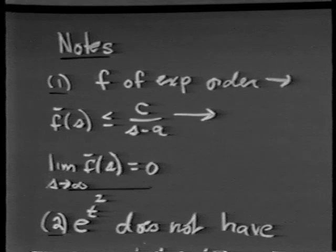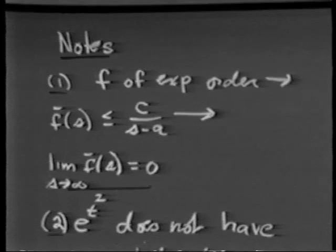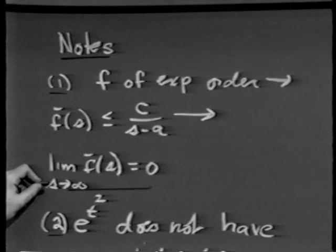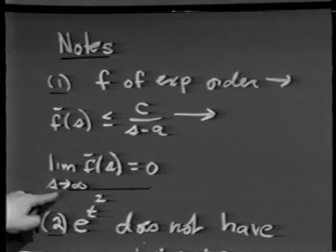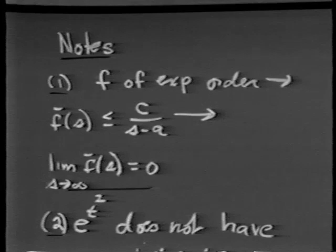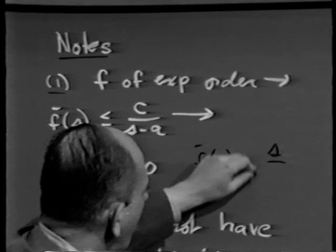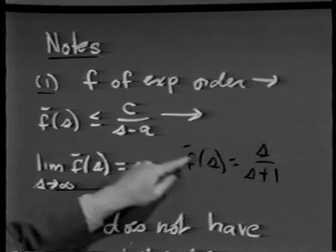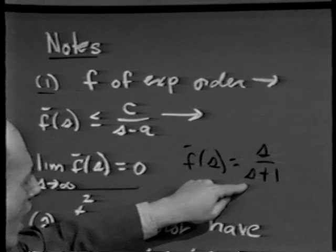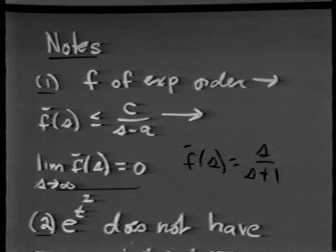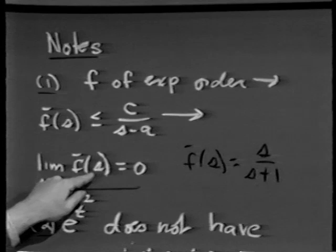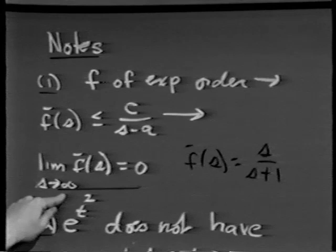This means not every function can be a Laplace transform of something. For f-bar to be the Laplace transform of a function of exponential order, f-bar of s must go to 0 as s goes to infinity. For example, if f-bar of s were s over s plus 1, the limit as s goes to infinity is 1. Consequently, this f-bar cannot be the Laplace transform of any function of exponential order. Also, not all functions have exponential order — for instance, e to the t squared does not, because e to the t squared divided by c times e to the at goes to infinity as t approaches infinity.